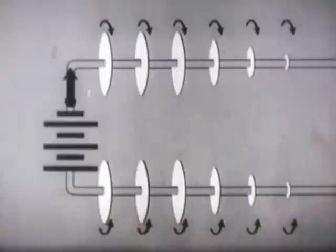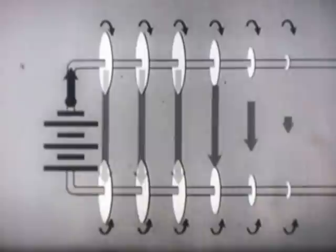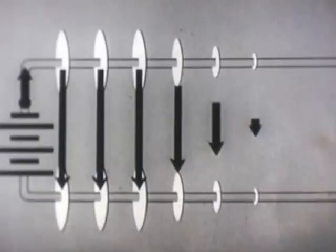The fields around the upper and lower conductors oppose each other. Notice that where you have maximum current flow, or magnetic buildup, you have maximum voltage.